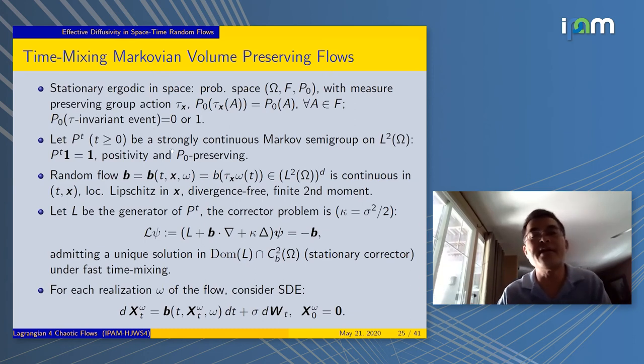In space, it's stationary or ergodic. There's a measure-preserving group action τ_x. Preserve the measure, and it's ergodic. In time, it's Markovian. There's a semi-group T of t. The space-time flow could be represented this way. Let the group action induce x, and there's a time in there. This flow, we are going to assume it's locally Lipschitz, has some smoothness, divergence-free, has a finite second moment.